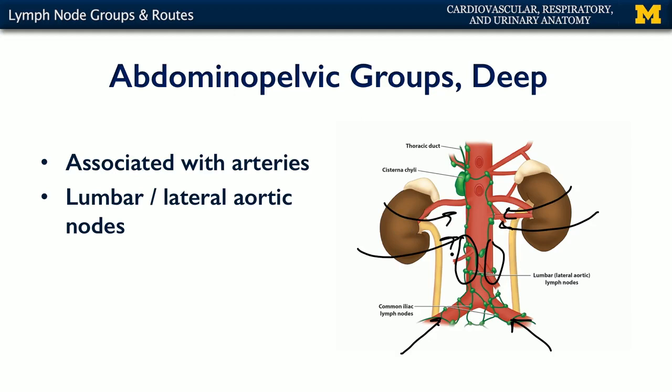These lateral aortic nodes feed into the cisterna chyli — the proximal-most portion of the thoracic duct, which is a dilated bit of thoracic duct. From there, lymph ascends through the diaphragm and up through the thorax, eventually draining into the left venous angle and returning back into circulation there.